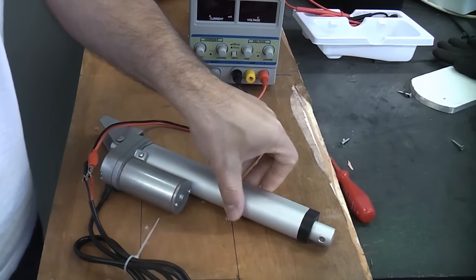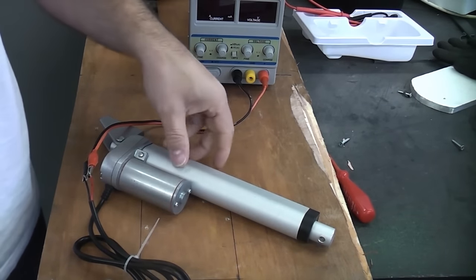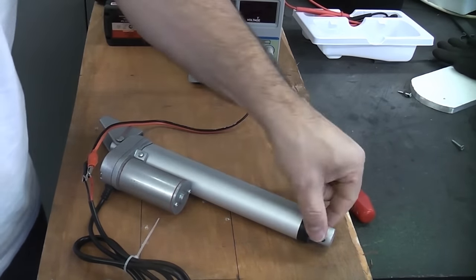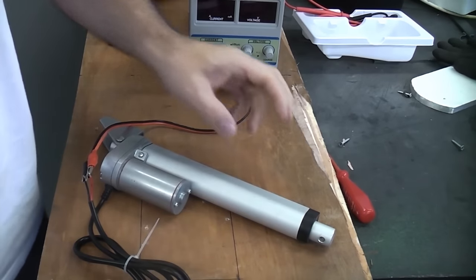This is a linear actuator. It's very similar to a pneumatic cylinder. This part here actually extends and retracts once voltage is applied.